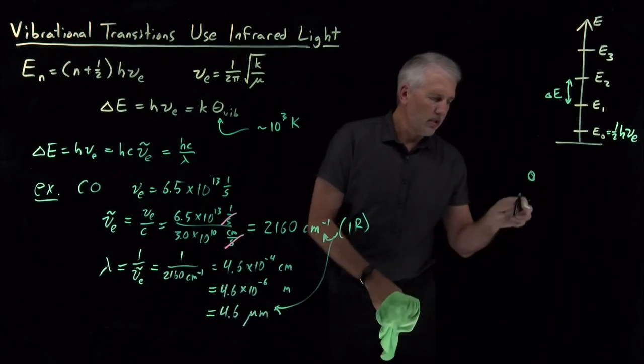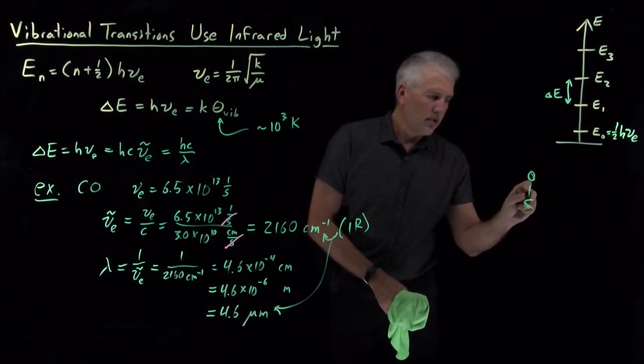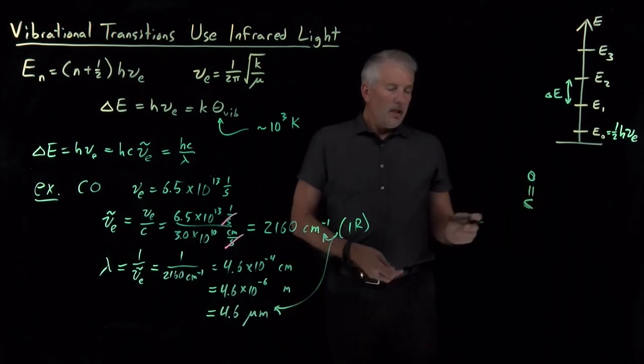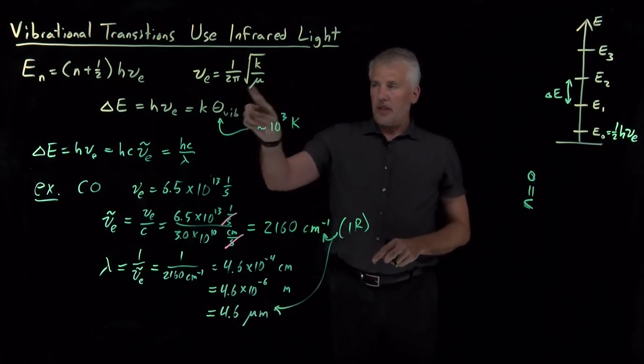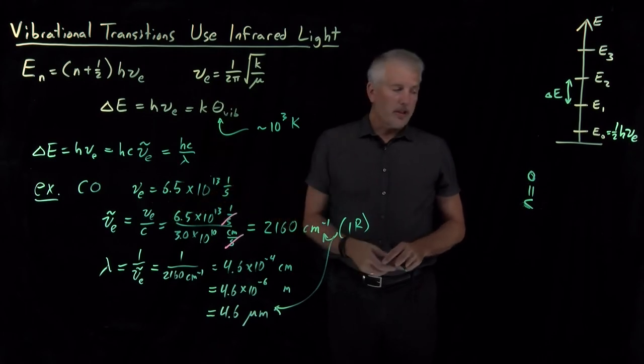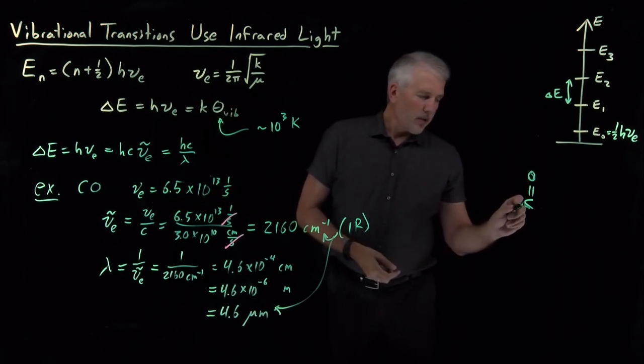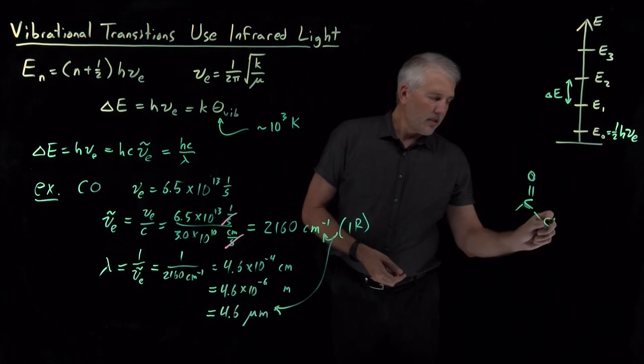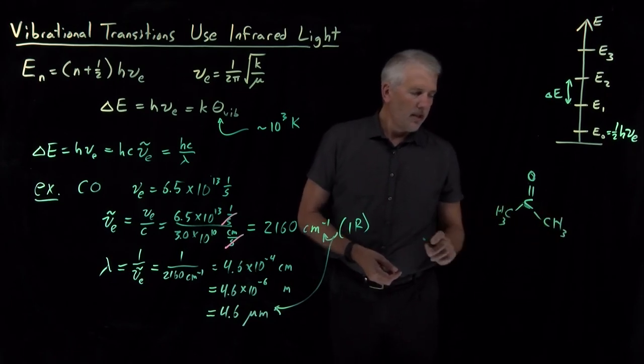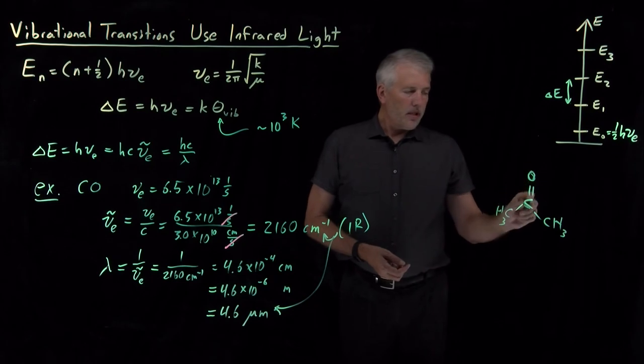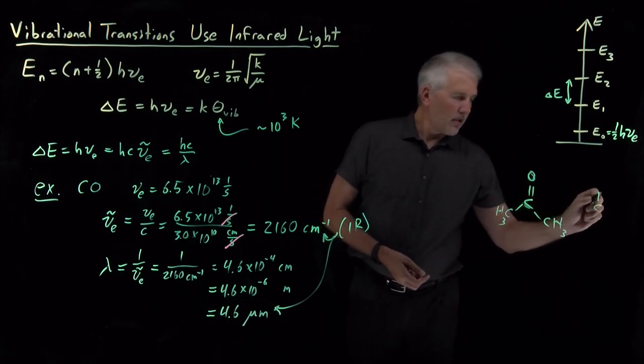Sorry. Double bonded. So, carbon monoxide molecule with a spring constant reduced mass that we can use to tell us this number for the frequency. Let's suppose we have another molecule with a carbon oxygen bond, a molecule like, let's say, acetone.